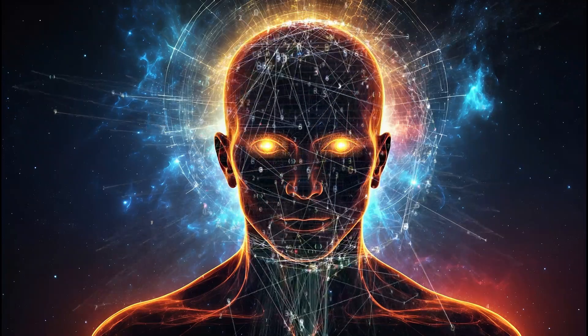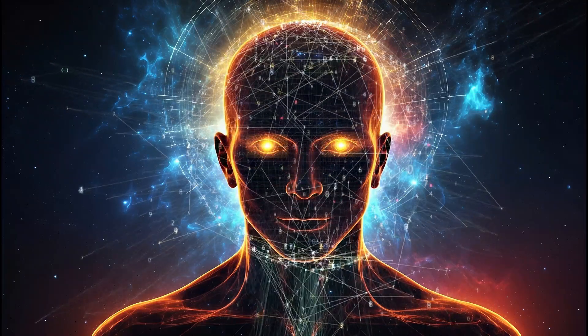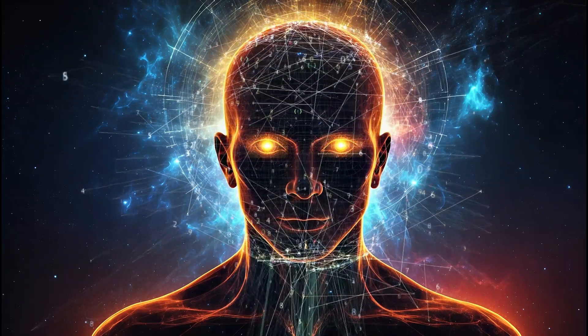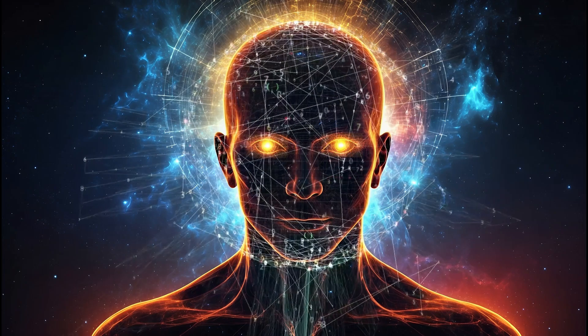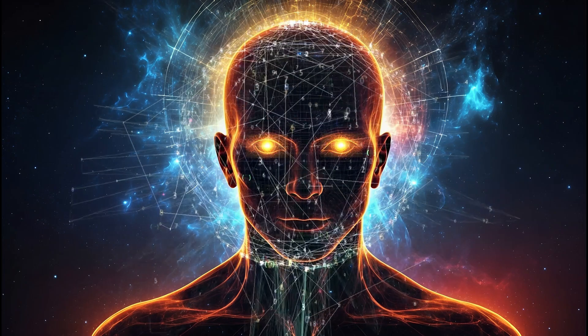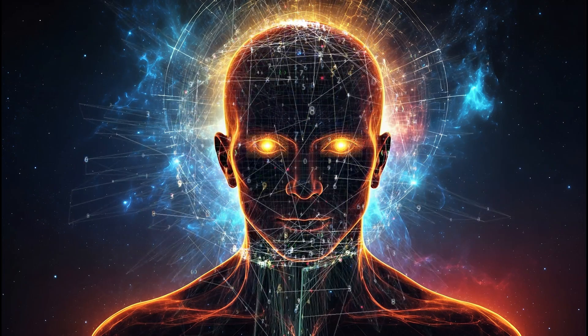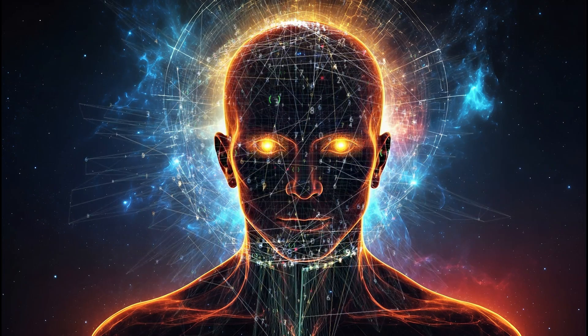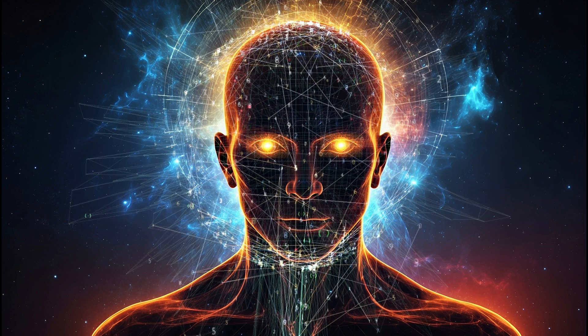Parietal lobe. The parietal lobe processes sensory information from the body, helping us perceive touch, temperature, and pain. It also plays a role in understanding spatial relationships and coordinating movements.